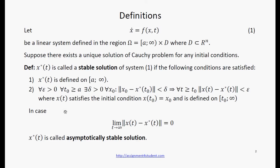In case the second solution asymptotically tends to the original solution, then we call X star of t asymptotically stable solution.